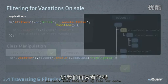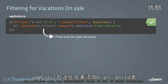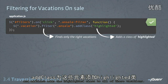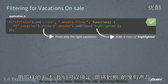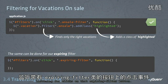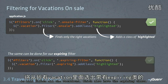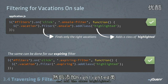Let's move this back up into our code. As we mentioned, filter finds the right vacations and addClass adds the highlighted class to all of those vacations. We can do the same thing for our expiring filter — listening for clicks on that expiring filter button, then when it's clicked we filter all the vacations which also have the expiring class and add the class of highlighted.